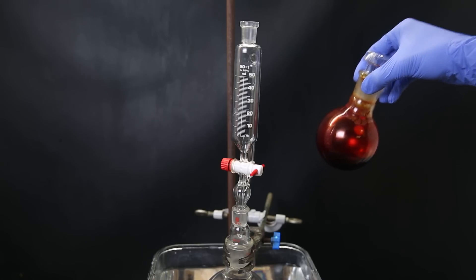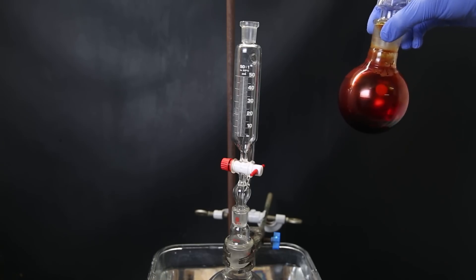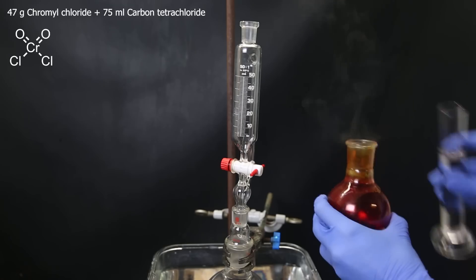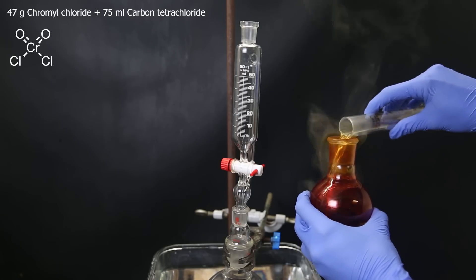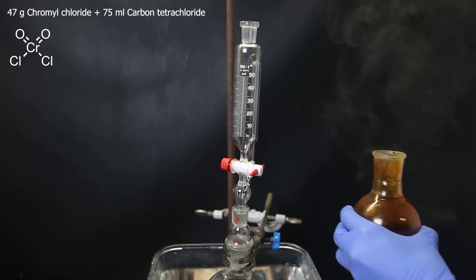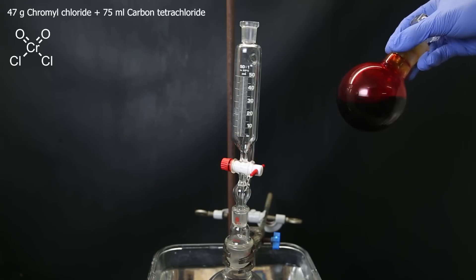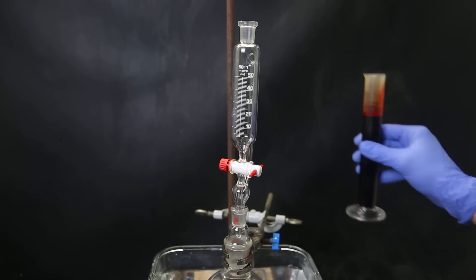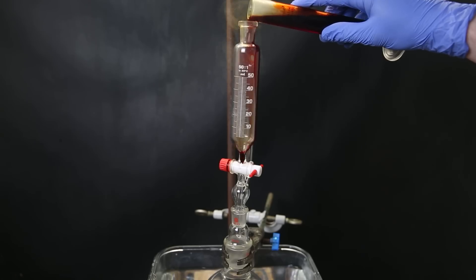Now, I will also dilute the chromochloride with the same solvent to have a tamer reaction. So I just mix 75 mils of carbon tetrachloride directly in the flask with the chromochloride. Since the dropping funnel is too small to hold it all at once, I will add it in two portions. So first, I add about 50 mils of the chromochloride solution to the dropping funnel.